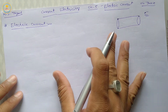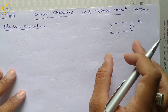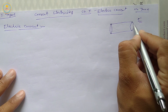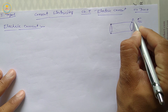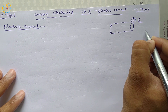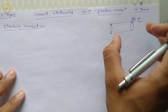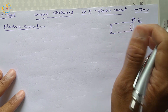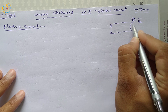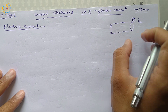We can say that the total amount of charge that flows through the cross-sectional area in per unit time is called electric current.